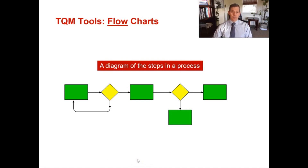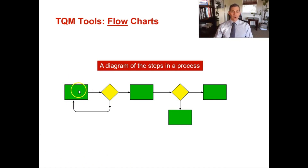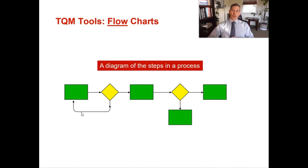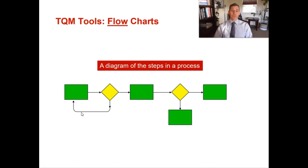A flowchart is the next TQM tool that helps us organize data. It's a visual representation of a process — you begin by listing all the steps, then classify each as a process step or a decision point. Rectangles represent a procedure or activity; diamonds indicate a decision point. In Kaizen events, teams cover walls with post-it notes laying out a flow diagram to identify non-value-added steps, decision points, and opportunities for error.